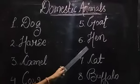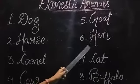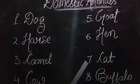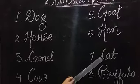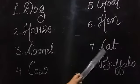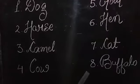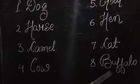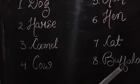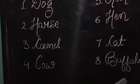Six, hen — H-E-A — hen. Seven, cat — C-E-T — cat. Eighth, buffalo — B-U-S-F-A — buffalo.